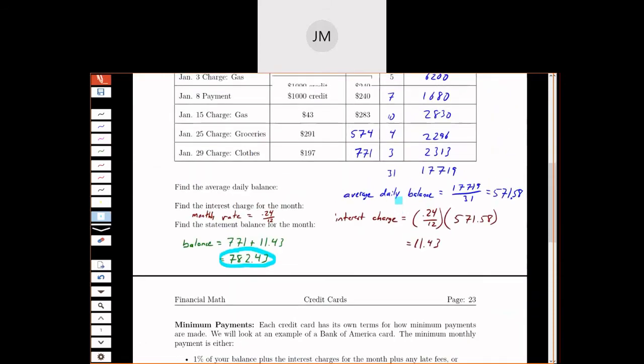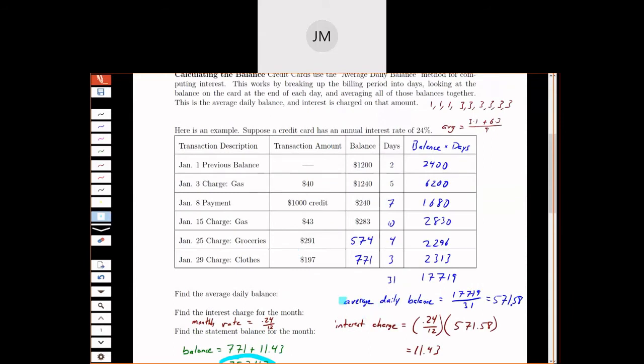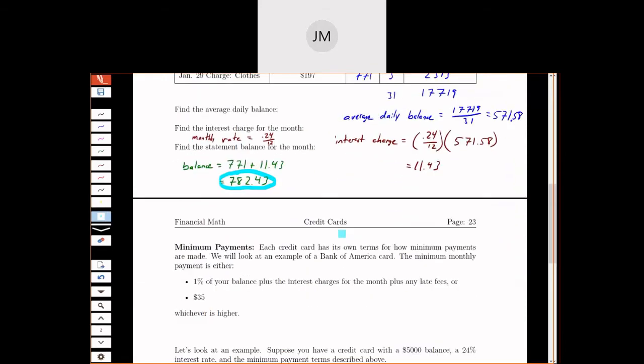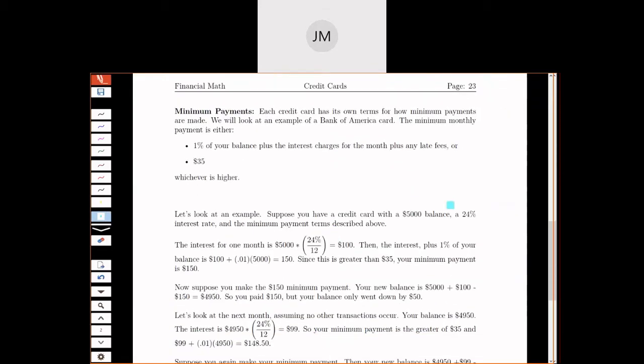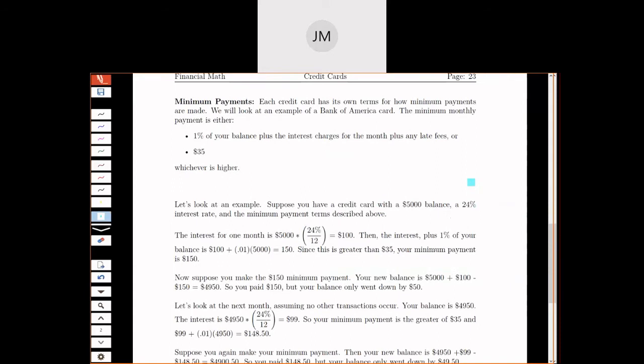So here's what we're going to do. We're going to look at minimum payments. Because if you paid off your entire credit card every month, you would pay no interest. So your $40 gas would cost you exactly $40. So what I want to do is look at the far end of the spectrum, what happens if you only make your minimum payments.